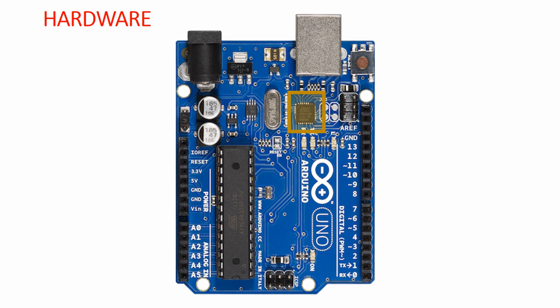This is the ICSP programmer IC which is used for uploading the program to your Arduino microcontroller. On the right of the Arduino Uno you can see 14 pins, starting from digital pin 0 to digital pin 13. These are the digital input/output pins available in your Arduino Uno, and you can use all these 14 pins as digital output or digital input.